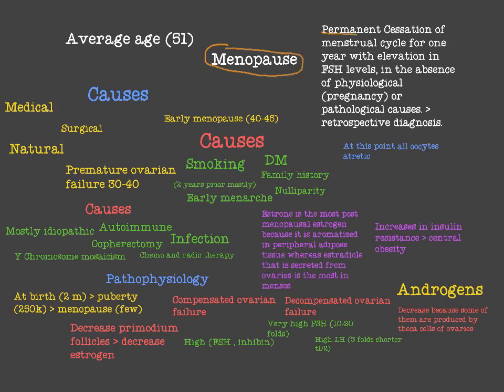Menopause is a permanent cessation of the menstrual cycle — it is the end of the menstrual cycle story for the female. It should be a permanent cessation for one year, with an elevation in FSH levels. This is because FSH acts on the ovaries; if we have ovarian failure, there are no primordial follicles, so there is negative feedback on the hypothalamic-pituitary axis, which causes elevated gonadotrophins — specifically FSH.